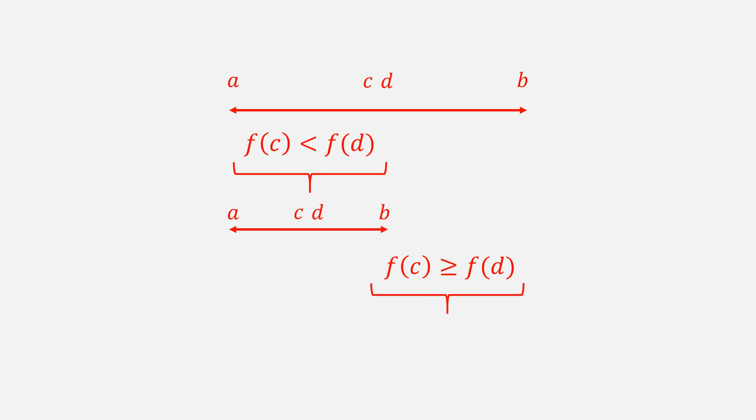When that was not the case, and F of C was greater than or equal to F of D, we would choose this as our new interval and repeat the process, still about half the size of our old one.